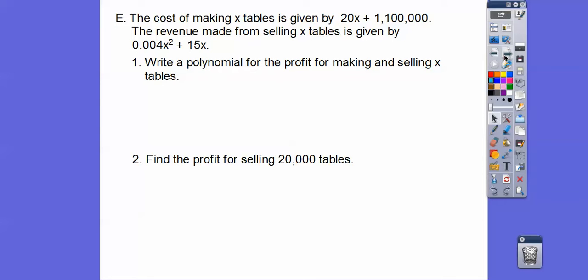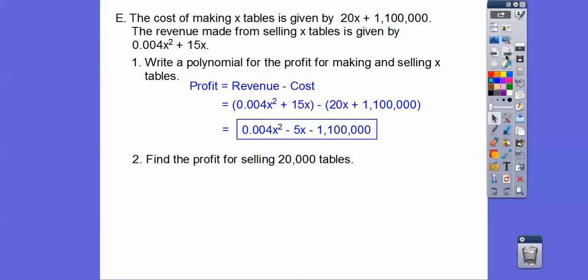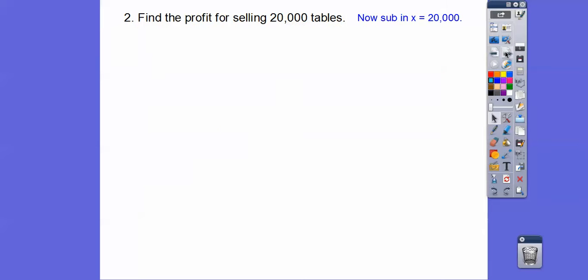The cost of making x tables is given by this function and the revenue by selling those x tables is given by this. So write a polynomial that describes the profit. Well, the profit is the revenue minus the cost. So we're going to plug that in. So they're going to do 15x minus 20x is going to be a minus 5x and then minus the 1,100,000. Now find the profit for selling 20,000 tables. So we just substitute in x equals 20,000 right there. Let's slide that up.